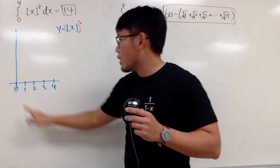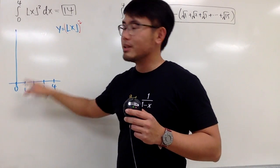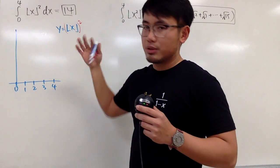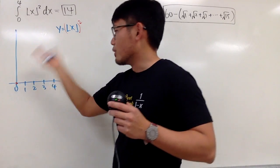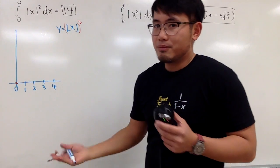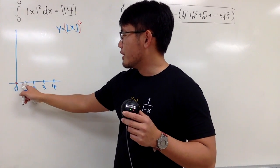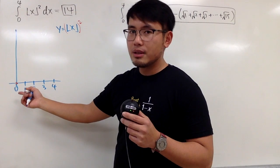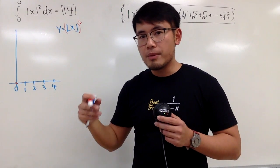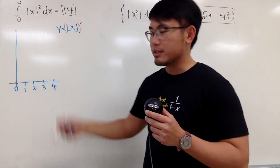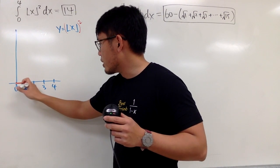When x is 0, floor of 0 is just 0, so you have 0. And you square that, of course still 0. In fact, if you have anything between 0 and 1, let's say 0.8, floor of 0.8 is 0, and you square that, you still get 0. So you get this right here — a flat segment along zero.